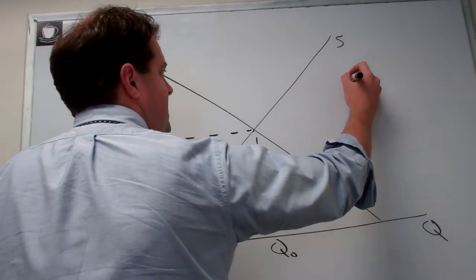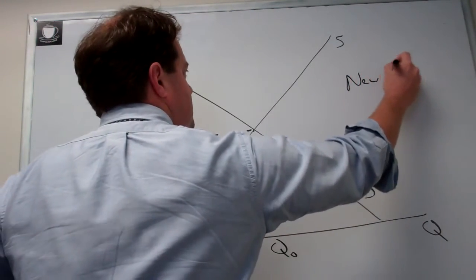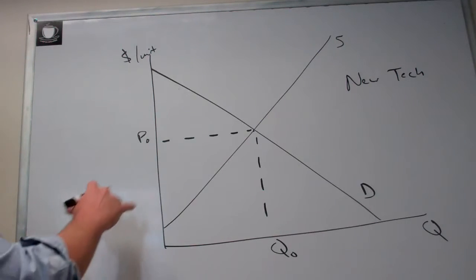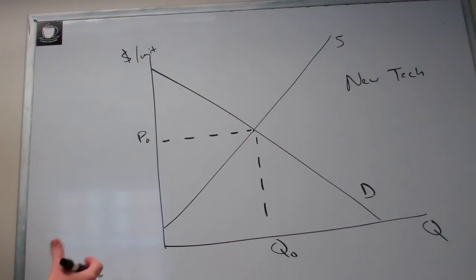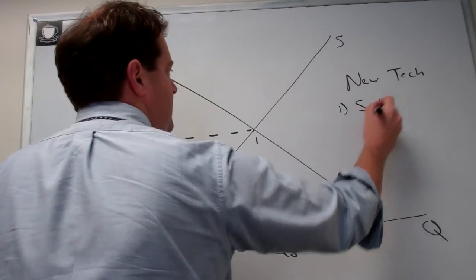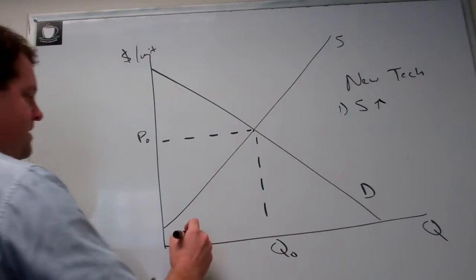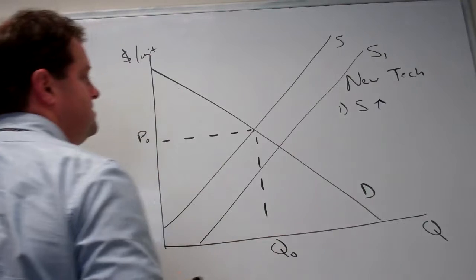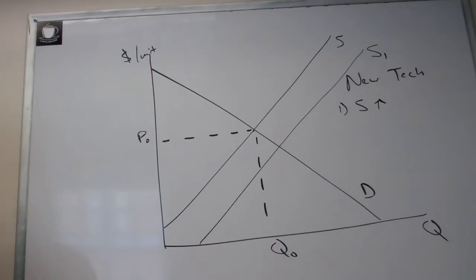And let's say that there's a new technology that ripples through the market. A new technology decreases the cost of production, so our shift is going to be a supply increase, and supply increases are rightward shifts of supply.